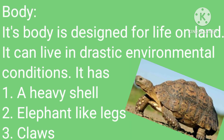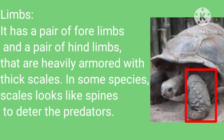Body: its body is designed for life on land. It can live in drastic environmental conditions. It has a heavy shell, elephant-like legs, and claws. Limbs: it has a pair of forelimbs and a pair of hind limbs that are heavily armored with thick scales.